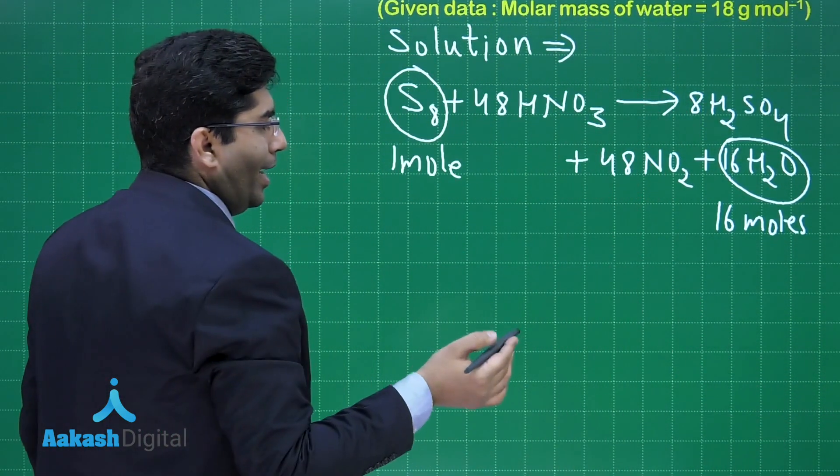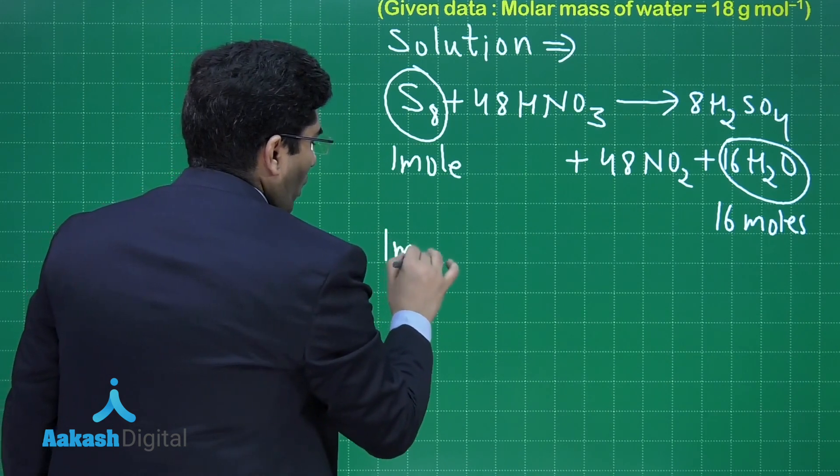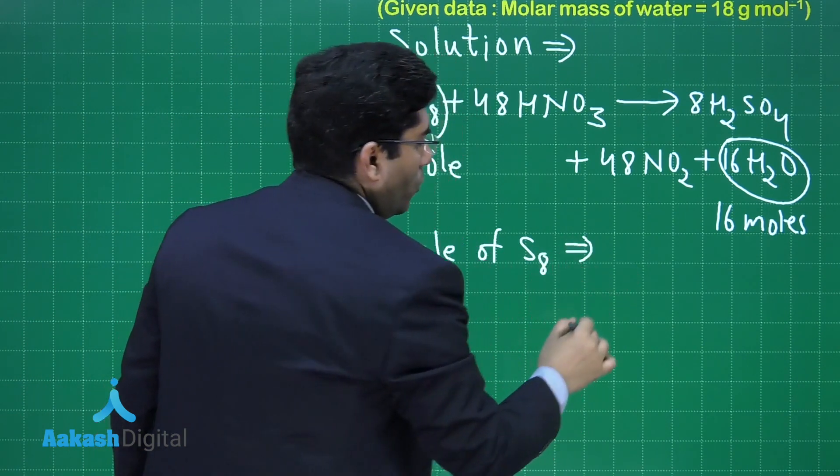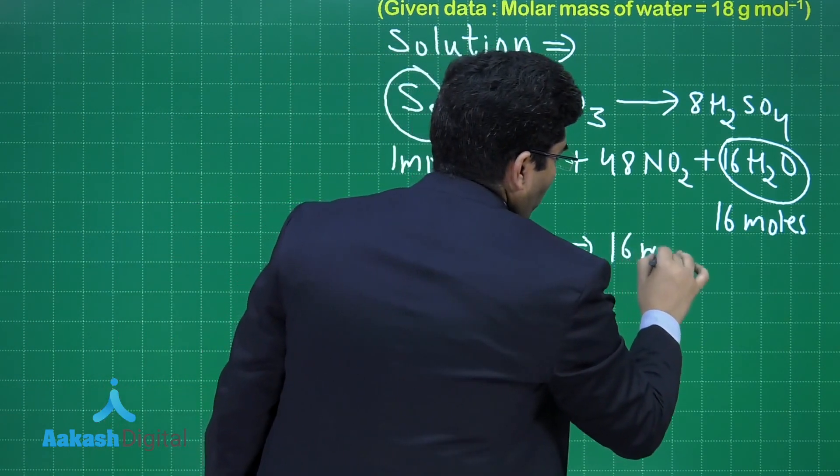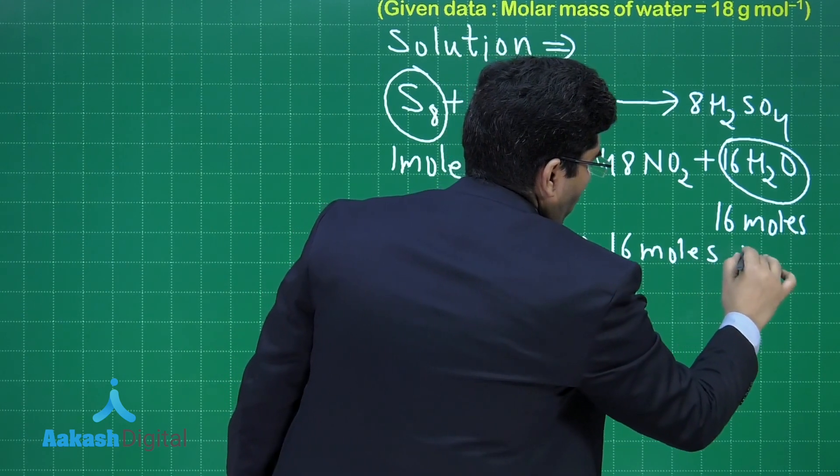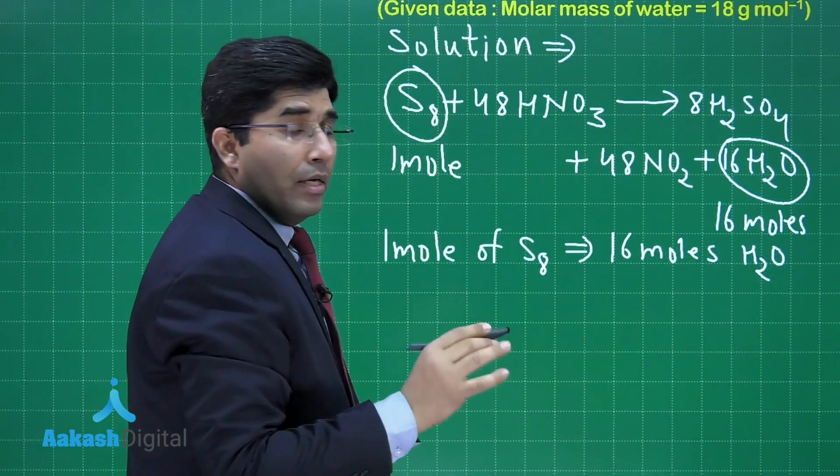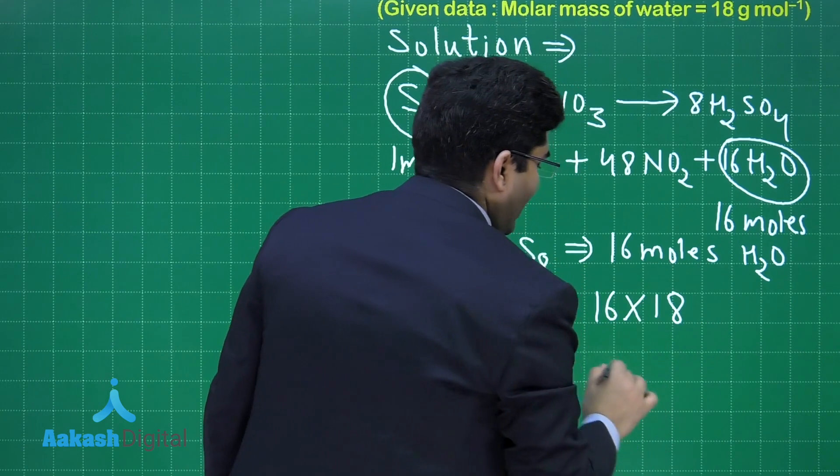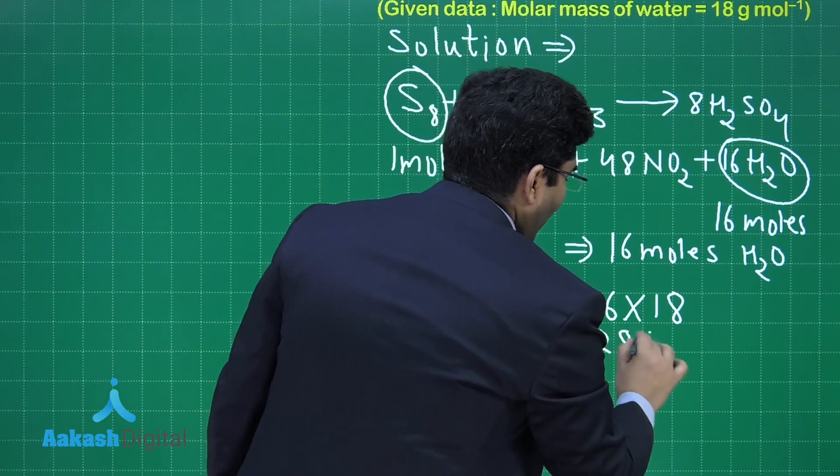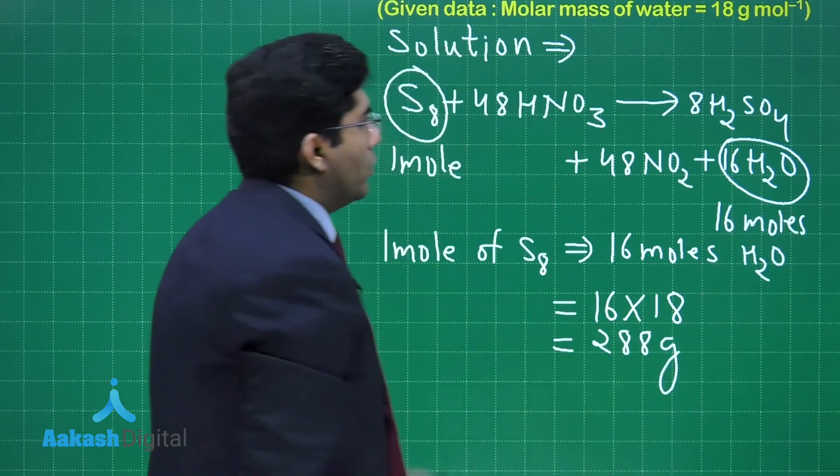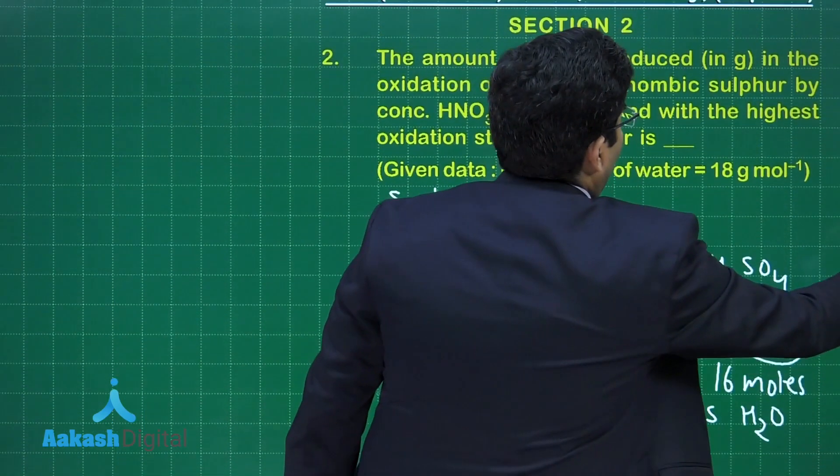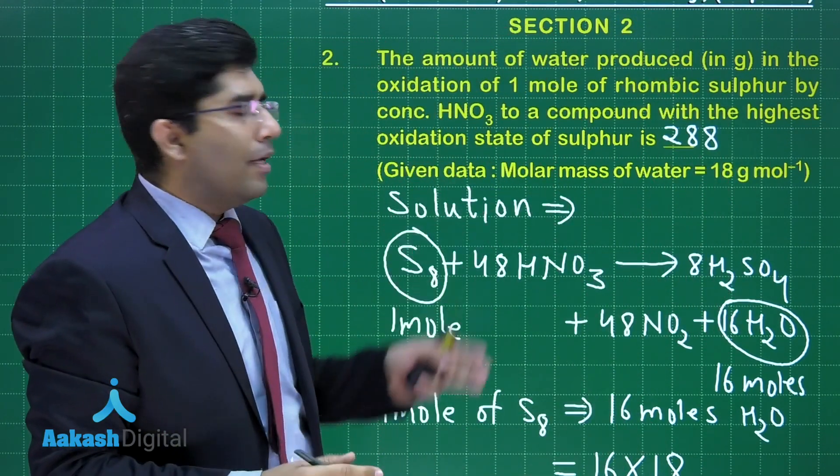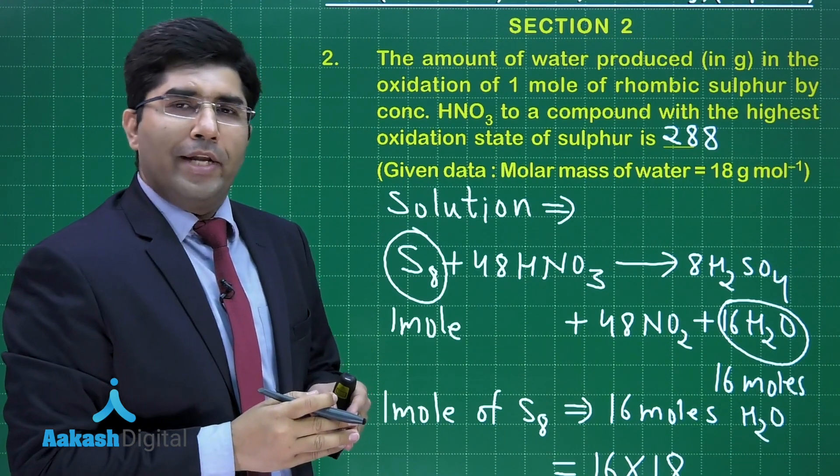From here, we can say that 1 mole of S₈ corresponds to 16 moles of water. And we have to find the answer in grams. That is why 16 times molar mass of water, that is 18, that will be equal to 288 grams. So, this is the final answer, and it will be 288. This is the correct option. Let us move on to the next question.